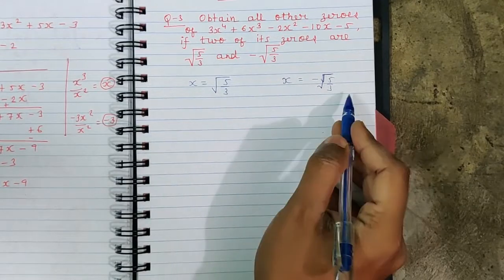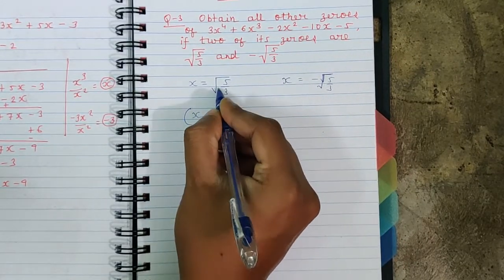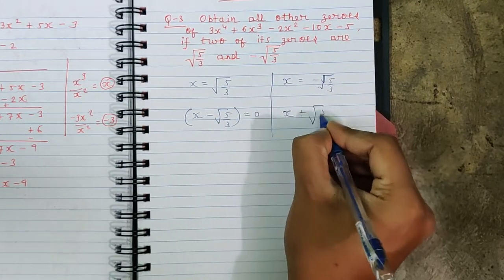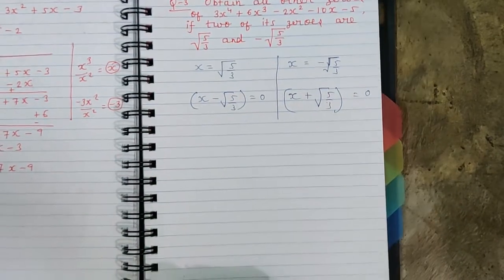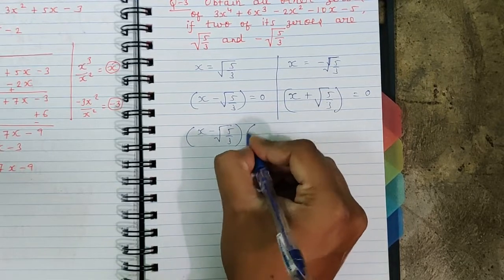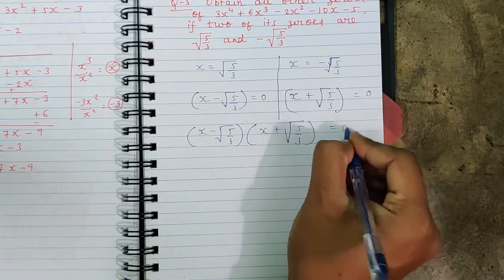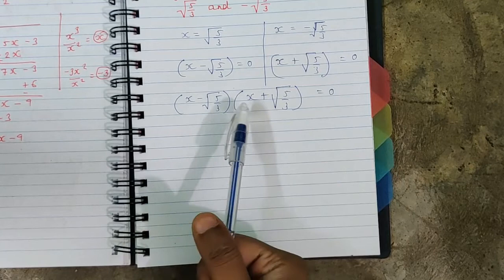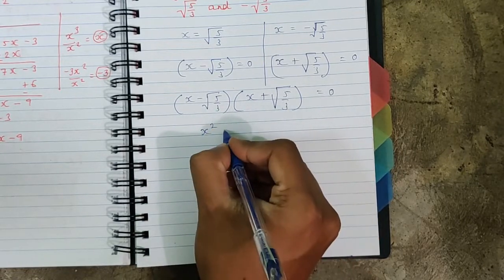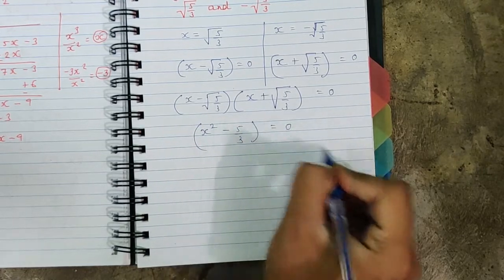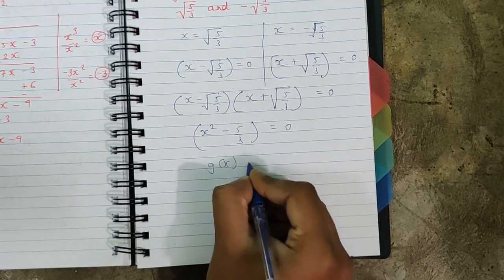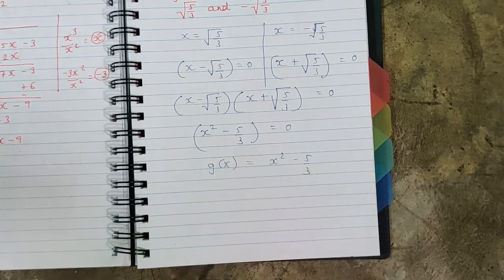We convert these zeros into factors. So x - √(5/3) = 0 and x + √(5/3) = 0. Because both are factors, we write (x - √(5/3))(x + √(5/3)) = 0. Recognizing the identity (a - b)(a + b) = a² - b², we get x² - 5/3 = 0. This becomes our divisor, so g(x) = x² - 5/3.